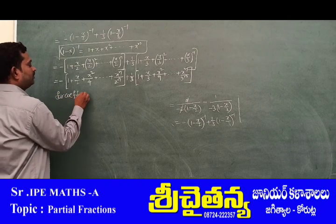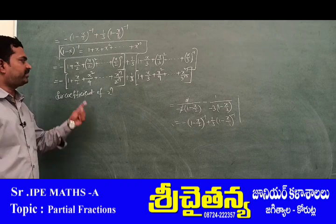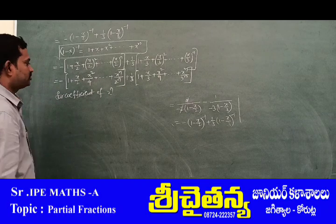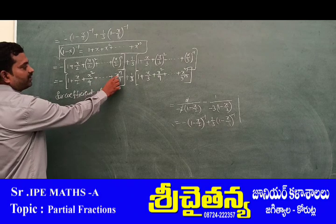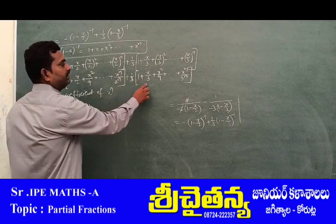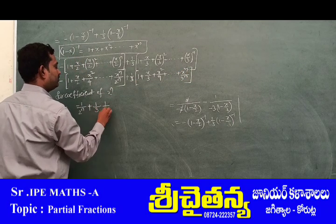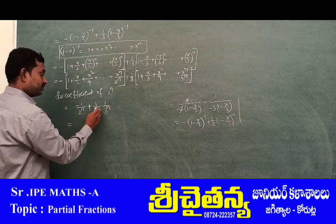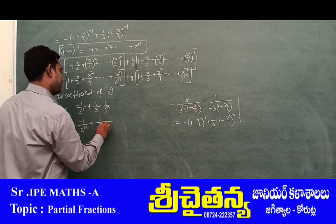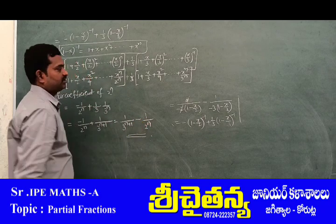Finding the coefficient of x^n: in the first term, -(1/2) × (1/2^n) = -1/2^(n+1) ... wait — it is -1/(2^n) from -(1/2)·(1/2^n). In the second term, (1/3)·(1/3^n) = 1/3^(n+1). Therefore, the coefficient of x^n = 1/3^(n+1) - 1/2^n.